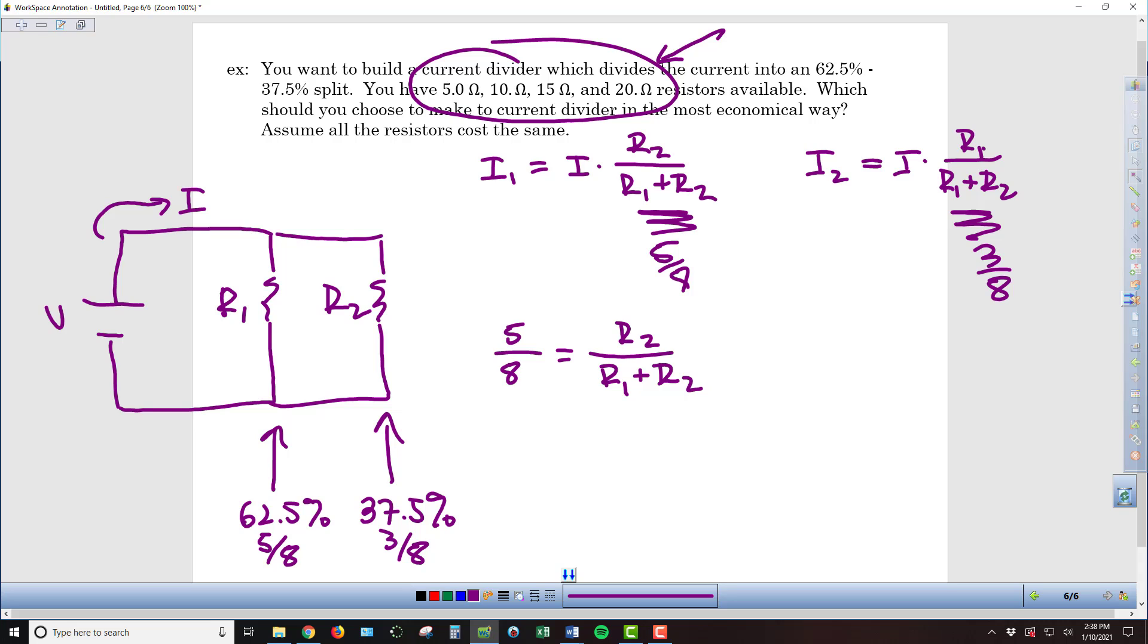Now, if I said R2 equals 5, that would be possible because I have a 5 ohm resistor available. But that would mean that R1 would have to be 3. And I can't have that value because I don't have a 3 ohm resistor. So what I need to do is I need to multiply this fraction by something so that I'll end up with multiples of 5 on both the top and the bottom. And so the smallest number I can multiply by is 5.